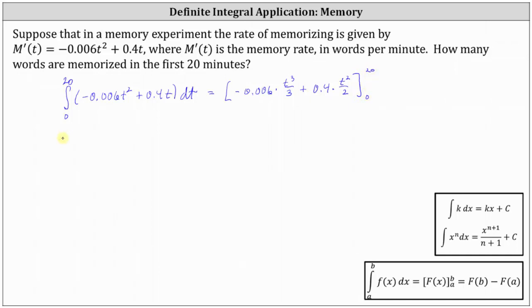Next let's simplify. -0.006 divided by 3 is equal to -0.002 which gives us -0.002t³ plus 0.4 divided by 2.